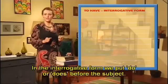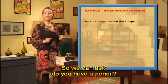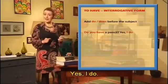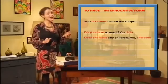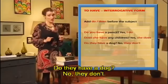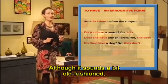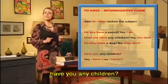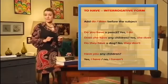In the third person, don't have changes to doesn't have. He doesn't have a girlfriend, but we don't have the book. In the interrogative form, we put do or does before the subject. Do you have a pencil? Yes, I do. Does she have any children? Yes, she does. Do they have a dog? No, they don't. Although it sounds a bit old fashioned, sometimes we also say have you any children? Yes, I have. No, I haven't.